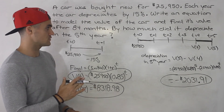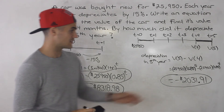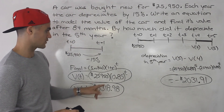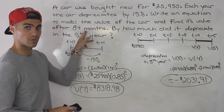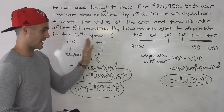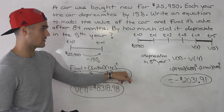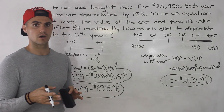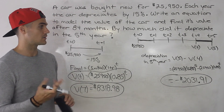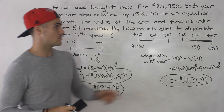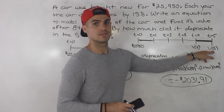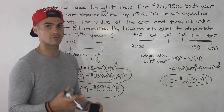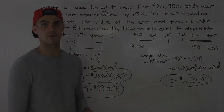Be careful with these types of questions. If they ask for the value of the car at a specific point in time, like after 84 months, just plug in the t-value. If they ask for the change in value between a certain time period, you take the difference between the endpoints — that gives you the change in value within that time frame.